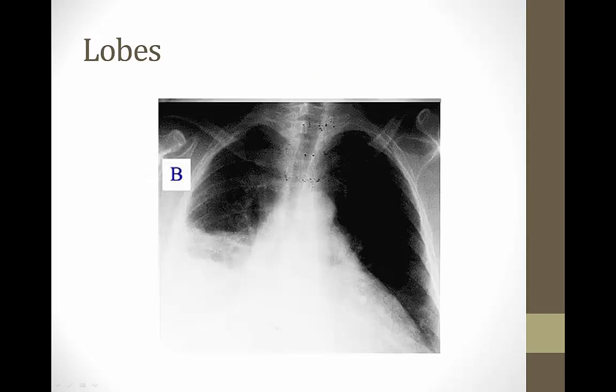This is important when talking about lobar pneumonia. For example, a right lower lobe pneumonia appears filled with white infiltrate, bacteria, and pus. Lobar pneumonia can occur in the middle or upper lobe on the right, or in either lobe on the left.